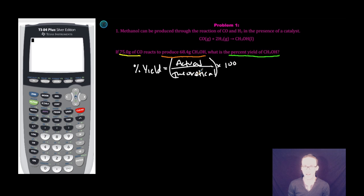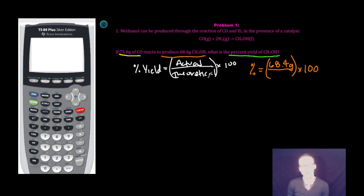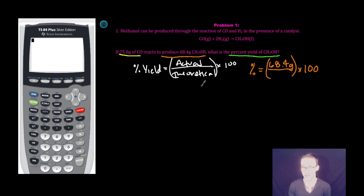Now we already know the actual yield — we're told that we produce 68.4 grams of methanol — but we need to know theoretically how much methanol should we have made. What in theory should be the amount of methanol that we make when we start with 75 grams of CO? Anytime you're looking for theoretical yield, it's simply a stoichiometry calculation — this is like in a perfect world, and for chemistry, a perfect world is on pen and paper.